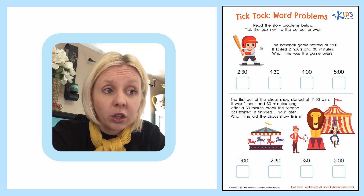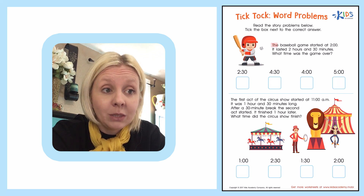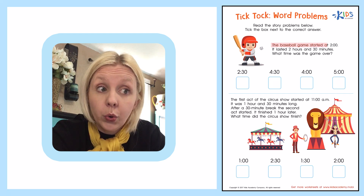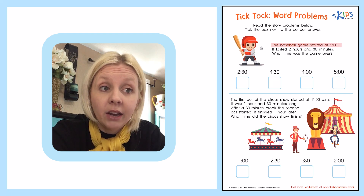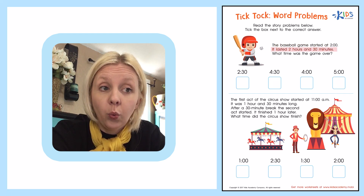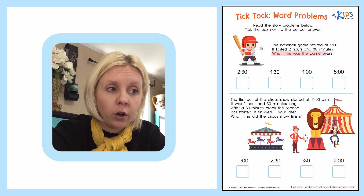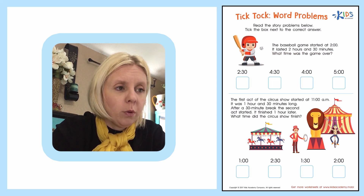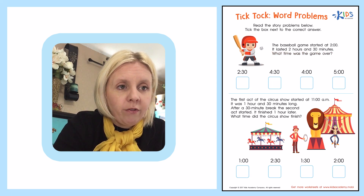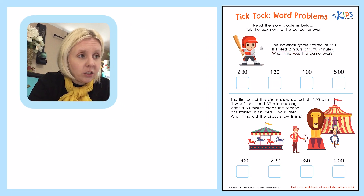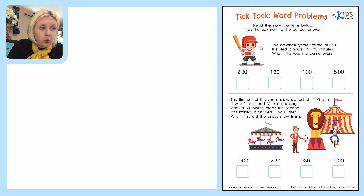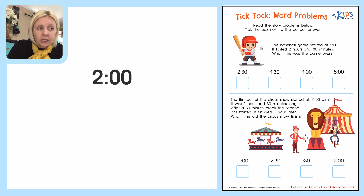Let's look at the first one. It says the baseball game started at 2 o'clock. It lasted 2 hours and 30 minutes. What time was the game over? So let's come over here and write this out. It started at 2 o'clock, and then it lasted 2 hours and 30 minutes.